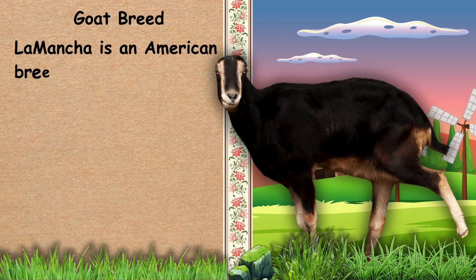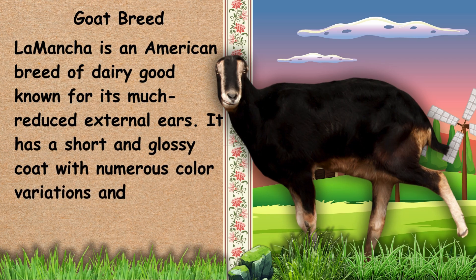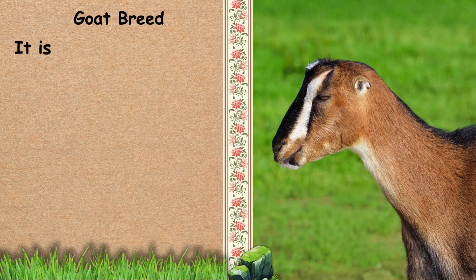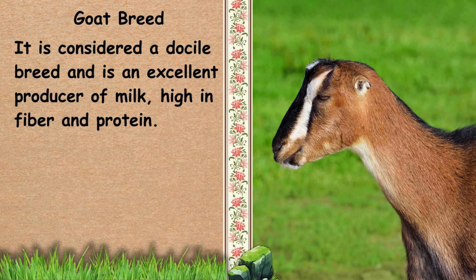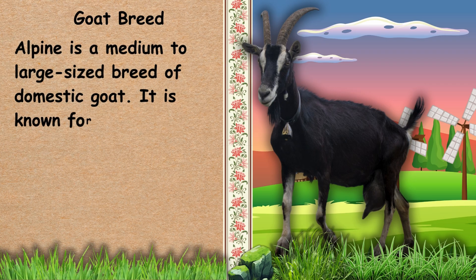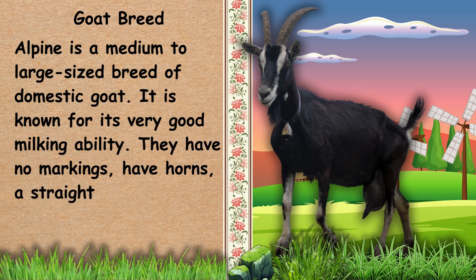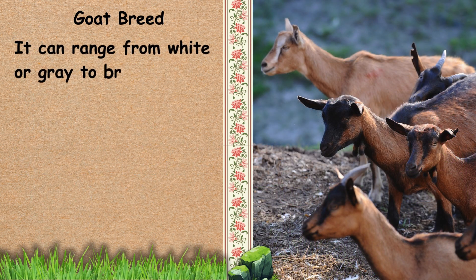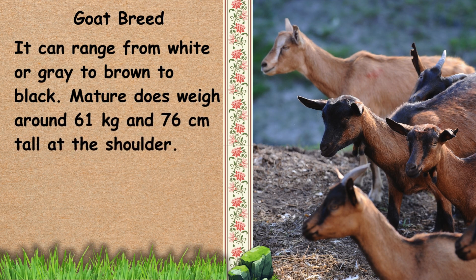Next, we have La Mancha. La Mancha is an American breed of dairy goat known for its much reduced external ears. It has a short and glossy coat with numerous color variations and patterns. It is considered a docile breed and is an excellent producer of milk, high in fiber and protein. Next, we have Alpine. Alpine is a medium to large-sized breed of domestic goat known for its very good milking ability. They have no markings, have horns, a straight profile and erect ears. It can range from white or gray to brown to black. Mature does weigh around 61 kg and stand 76 cm tall at the shoulder.